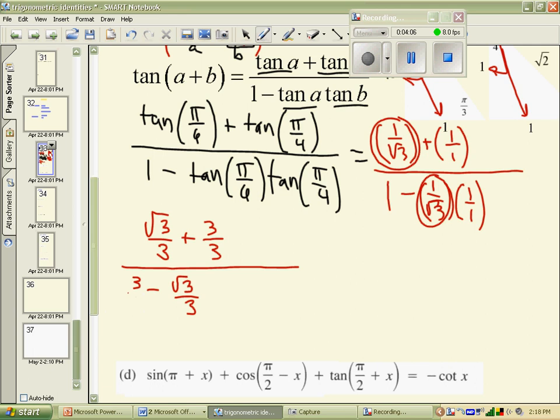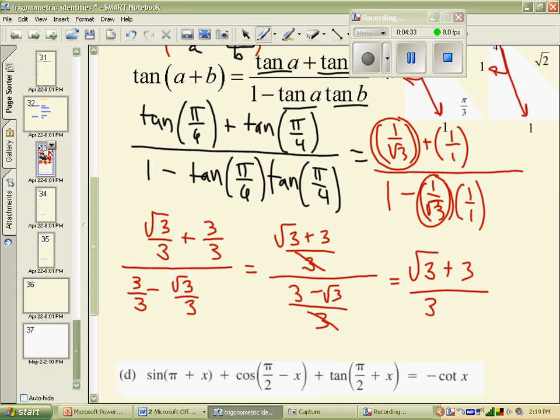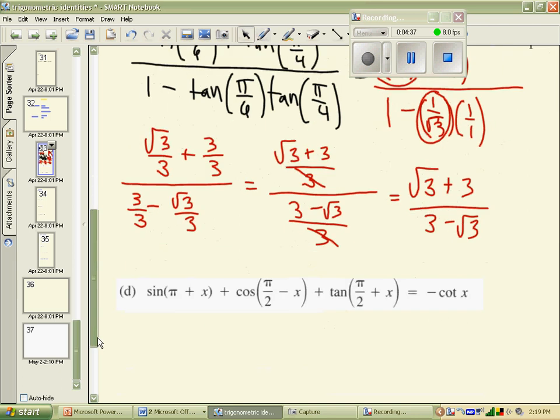Now that we have a common denominator, we will write the top as root 3 plus 3 all over 3. The denominator is 3 subtract root 3 all over 3. Those would obviously factor out, and now we're left with an expression of root 3 plus 3 over 3 minus root 3, which looks rather pretty, I guess, and the back of your textbook leaves an answer that looks like that.